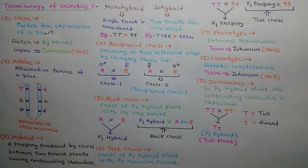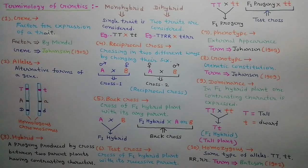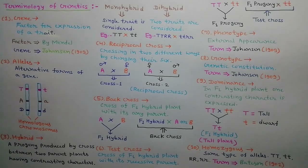In homozygous condition, the same type of alleles are present on the same locus on homologous chromosomes. For example, TT, tt, RR, rr, etc. The term homozygous was given by Bateson in 1902.